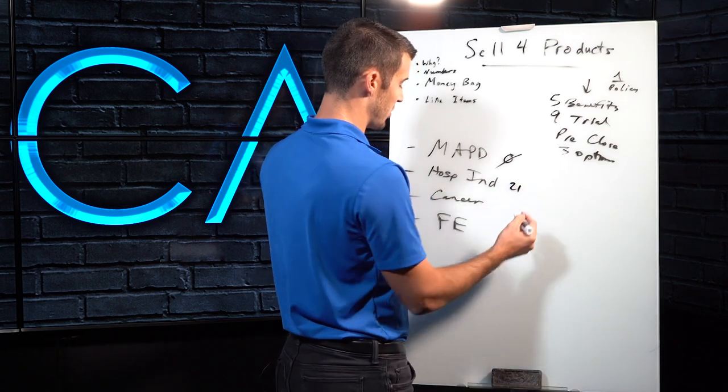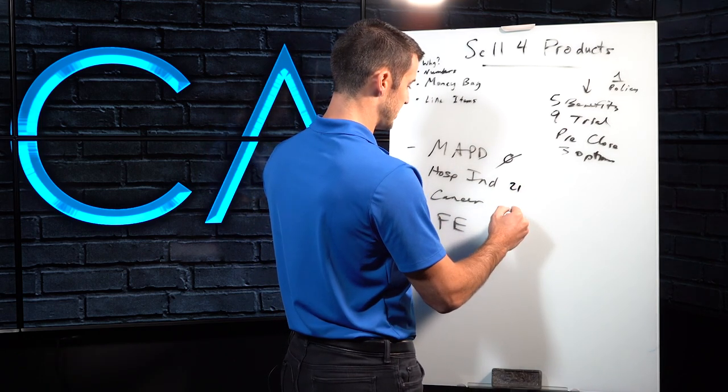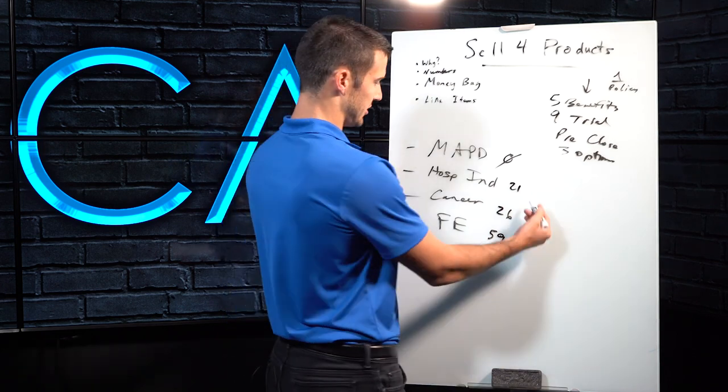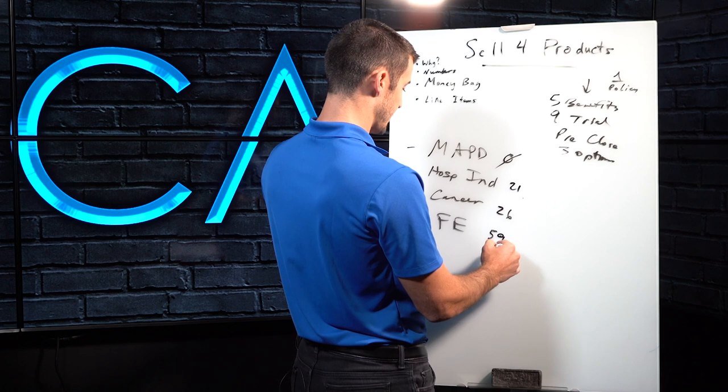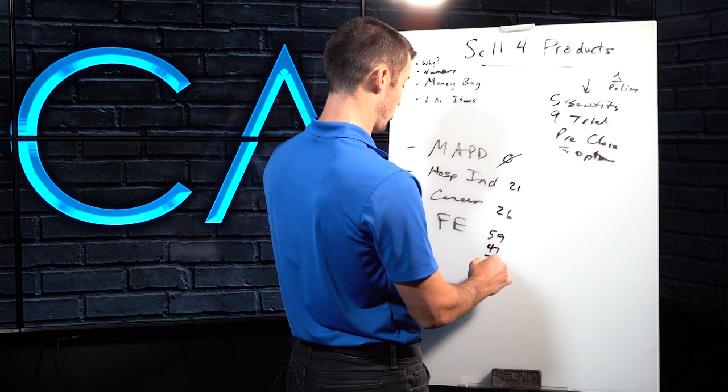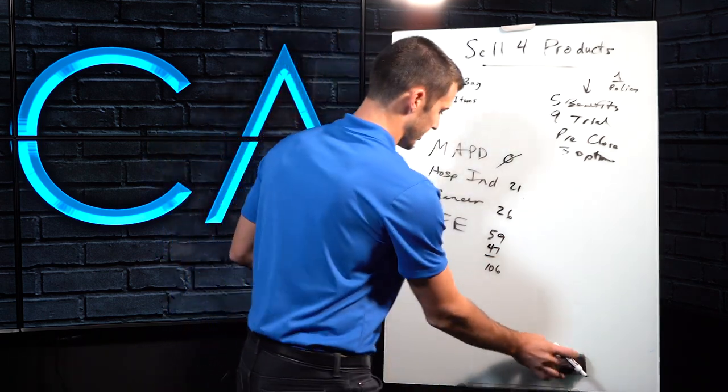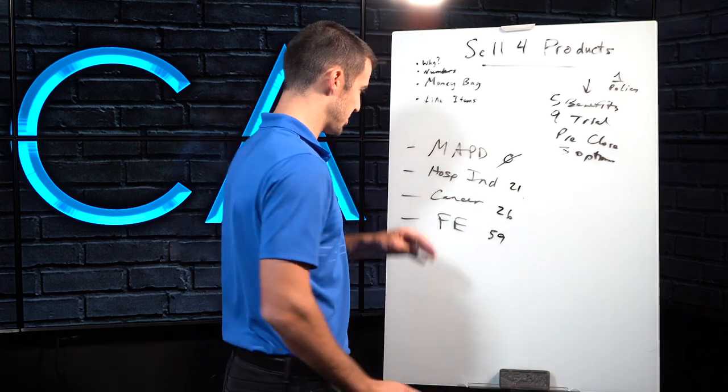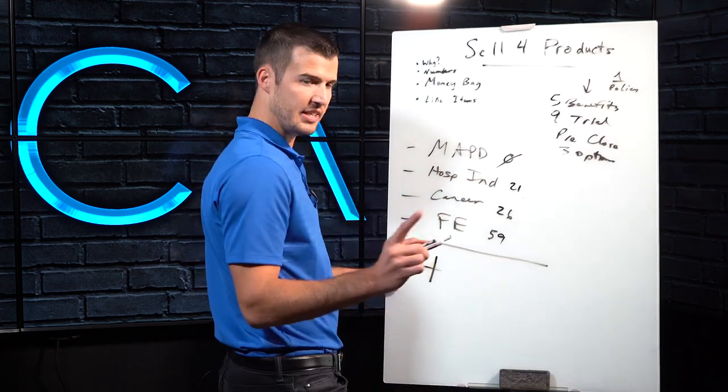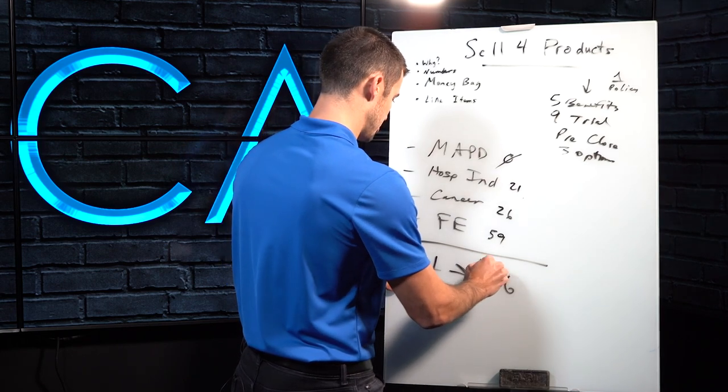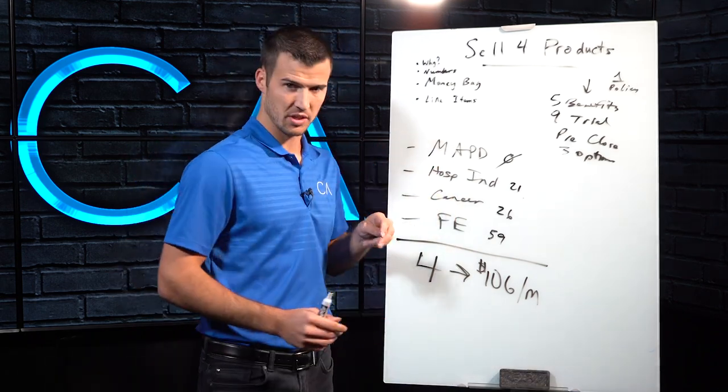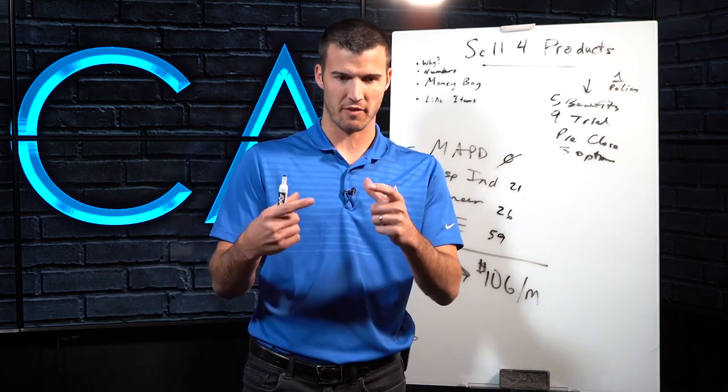The hospital indemnity plan is $21 a month. The cancer plan is $26 a month. And the final expense is $59 a month. So we're at 41, we're at 47 and 59. So let's just call it, what are we at? 106, I believe. 106. Not bad. Decent math. So we're $106. So the way I present that is I would go through line by line each and every one. And I would let them know that to cover all four of these areas, it's only $106 per month. And I'm going to make sure that I'm able to help you qualify for each and every one of these.